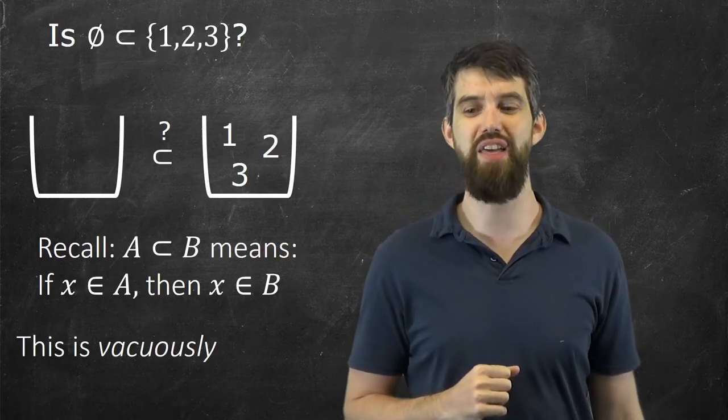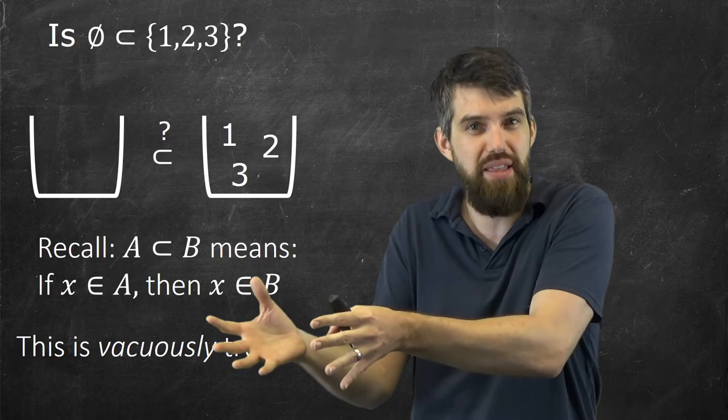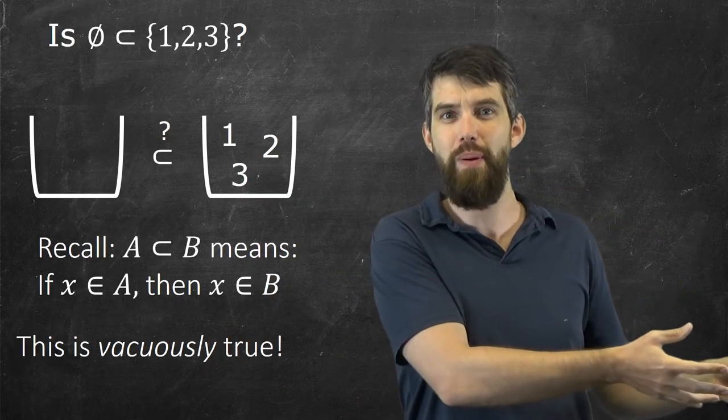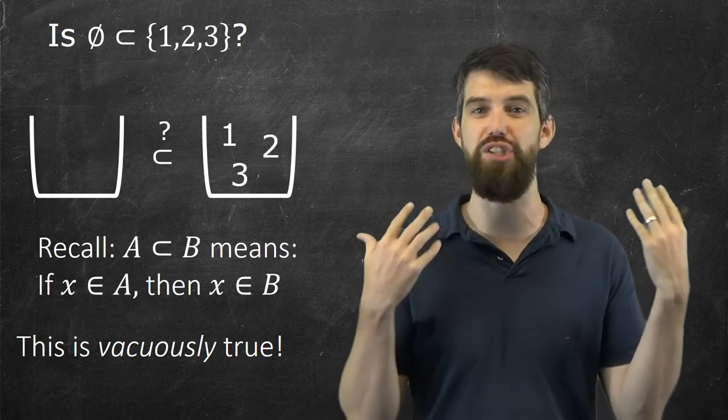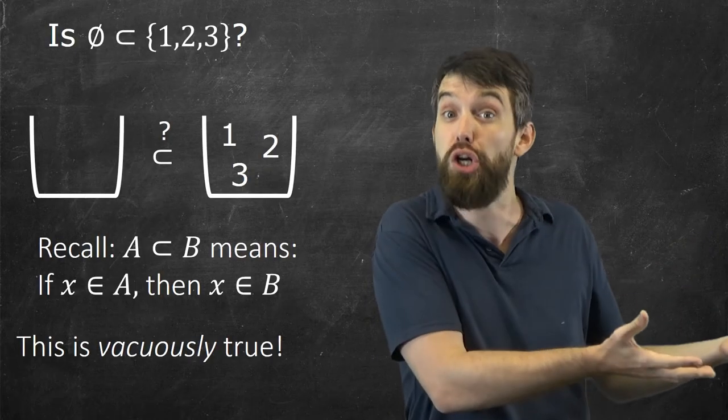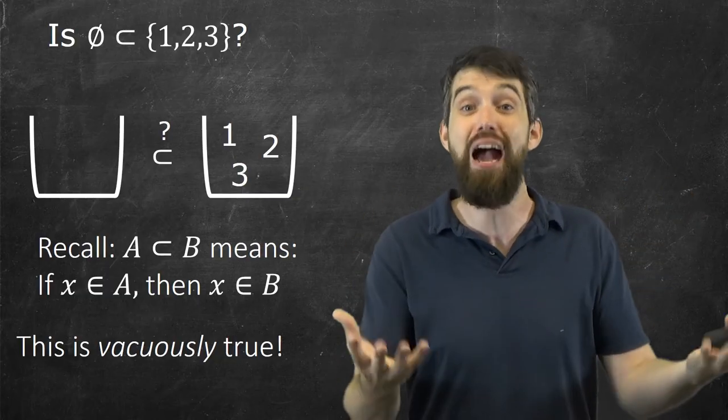We call this kind of thing vacuously true. As in, it's vacuously true that everything that's in the empty set is indeed inside of the set {1, 2, 3}. But while it's true, we say it's vacuously true because there's actually nothing for us to check. There's no element in the empty set that we have to verify does occur in the set {1, 2, 3}. It's just true in this trivial or vacuous way.